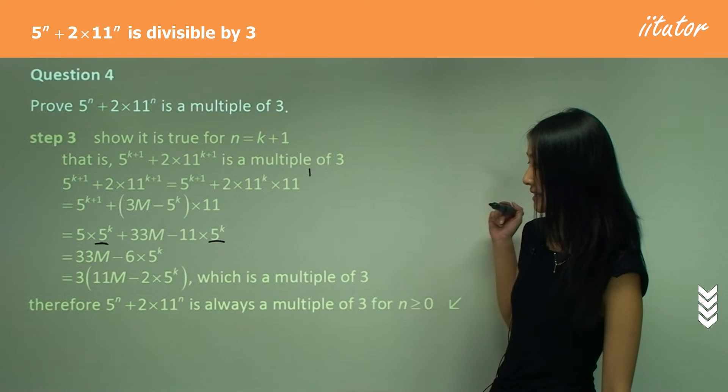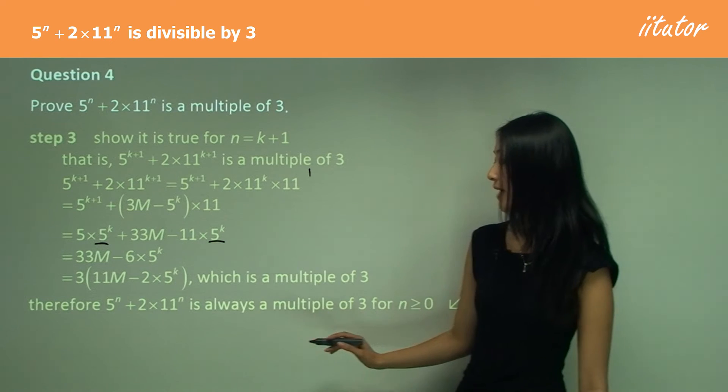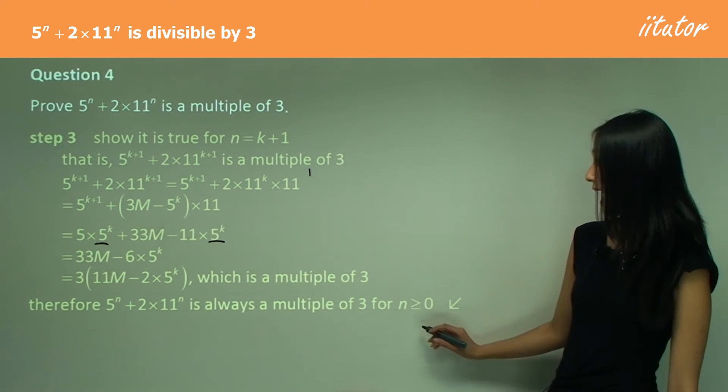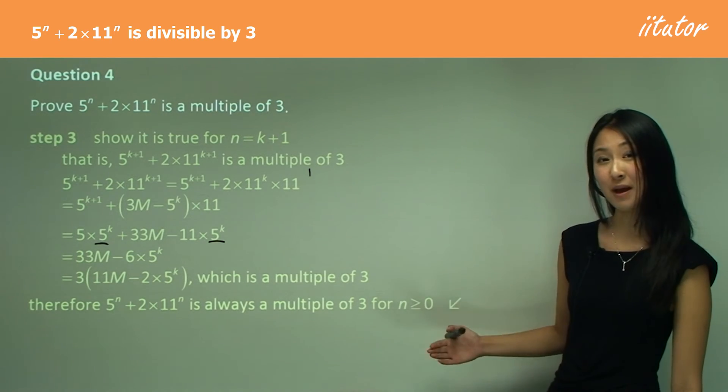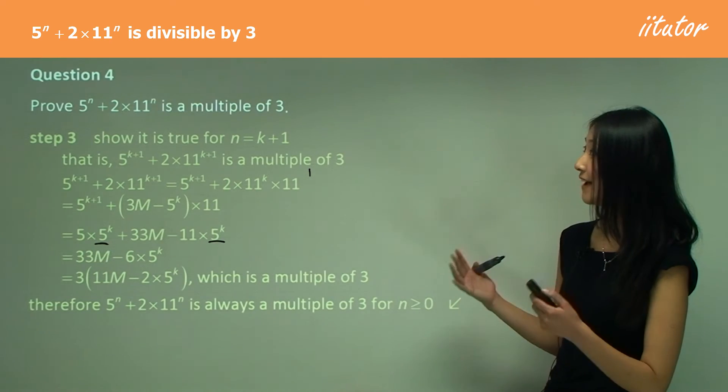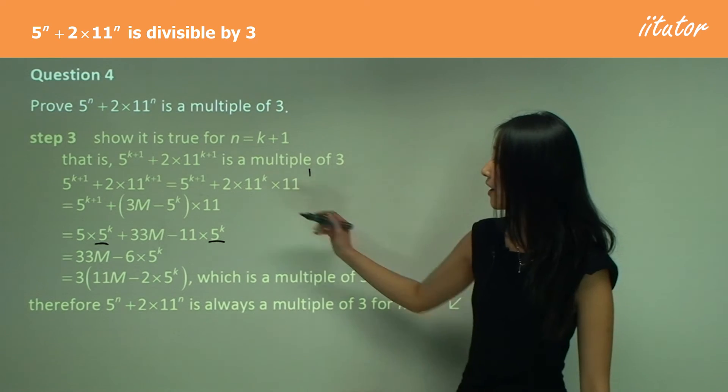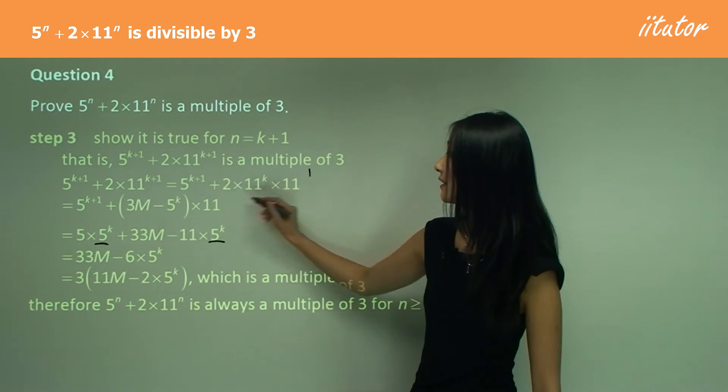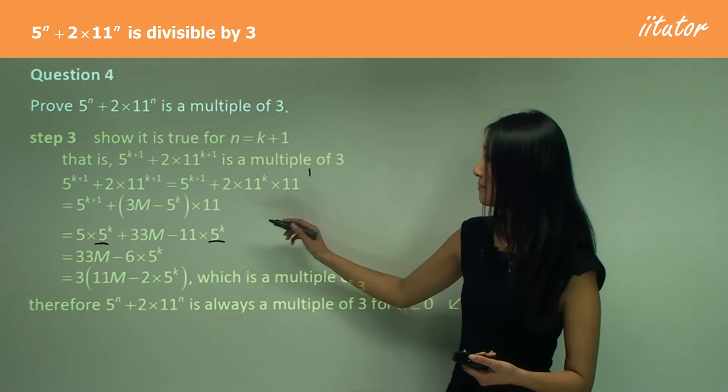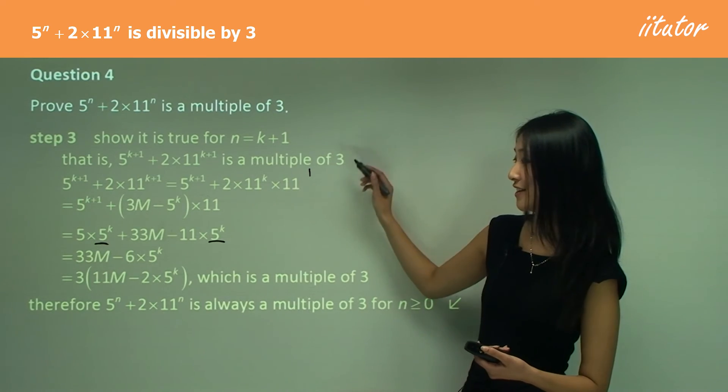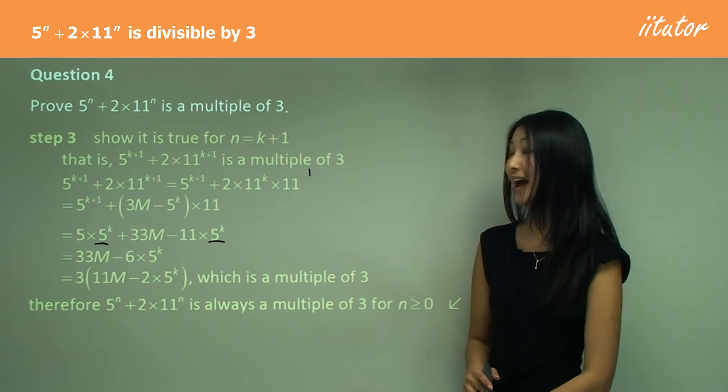And the conclusion for this is therefore five to the power of n plus two times 11 to the power of n is always a multiple of three. And in this case, it's for n is greater or equal to zero. Because remember, we started off with zero. So important fact with using multiple with two numbers that both have indices is over here, we want to eliminate either the 11^k or the five to the power of k. So just choose one and stick to that. And remember to always keep an eye on what we're trying to do, which is factorize out the three, which is why we knew we had to separate the five to the power of k plus one.